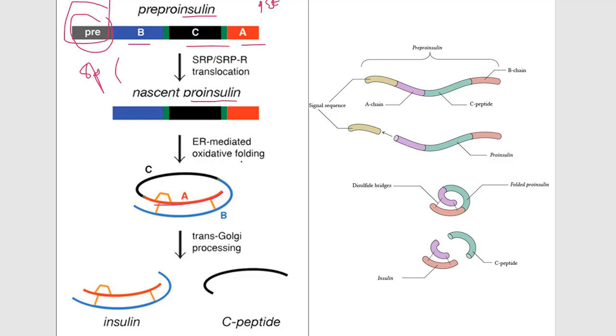This is after ER-mediated oxidative folding. The insulin is folded, and these orange lines are the disulfide linkages. Here also you can see this is the pre-pro-insulin: A chain, B chain, and the C peptide is the C chain. After splicing, signals will get cleaved, and we get the pro-insulin. And then this is the folding. This is the C chain, B, A, and B chain.